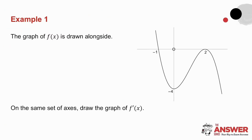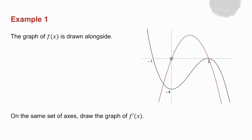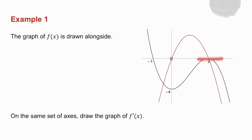Example number one. I want you to pause the video, try this yourself, and then we'll do it together. The question asks you to draw on the same set of axes the derivative of the original cubic graph. Remember: at a turning point the derivative is zero, so at a turning point my graph of the derivative will have an x-intercept. Here's another turning point, so again the derivative will have an x-intercept.